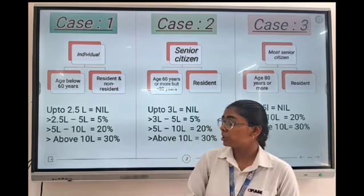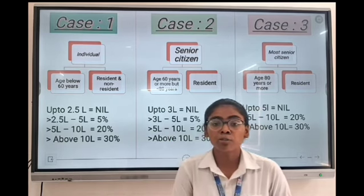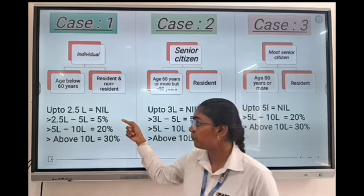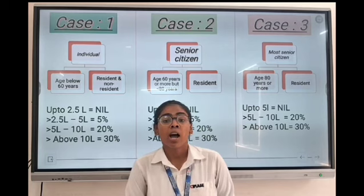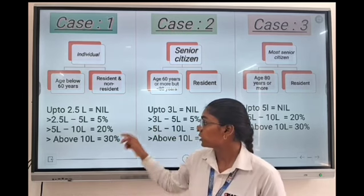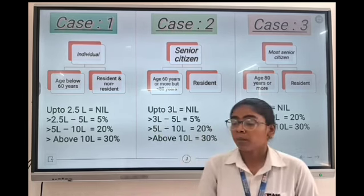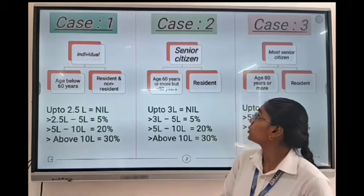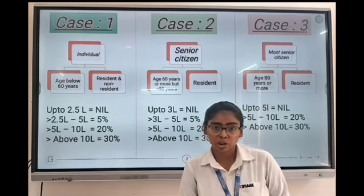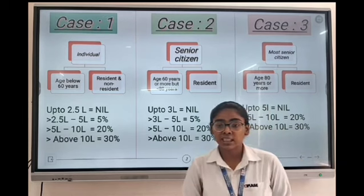The tax rates for Case 1 are: up to 2.5 lakh — no tax; above 2.5 lakh to 5 lakh — 5%; above 5 lakh to 10 lakh — 20%; and above 10 lakh — 30%.